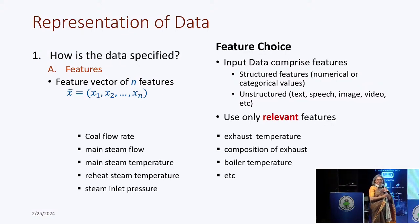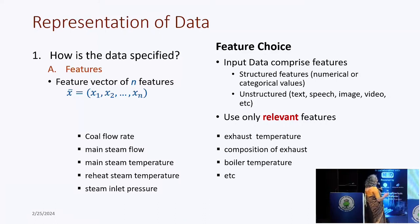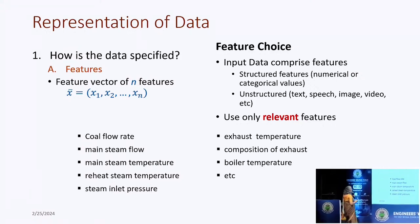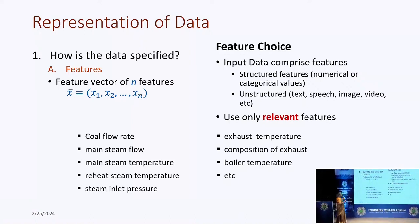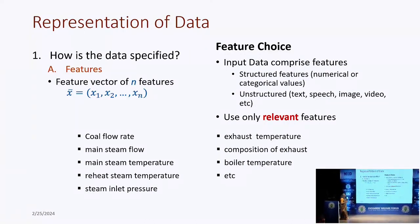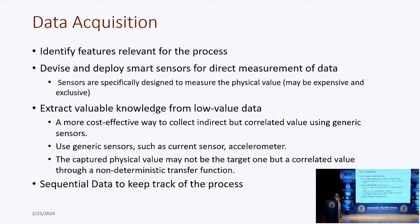I may make some mistakes talking about power plants, but according to some literature I studied, in some tasks of a power plant, you can think of features like coal flow rate, steam flow, steam temperature, main steam temperature, reheat steam temperature, steam inlet pressure, exhaust temperature, composition of exhaust, boiler temperature, and so on. Depending on the process you are trying to model, you have to identify relevant features and acquire them using IoT and sensors.